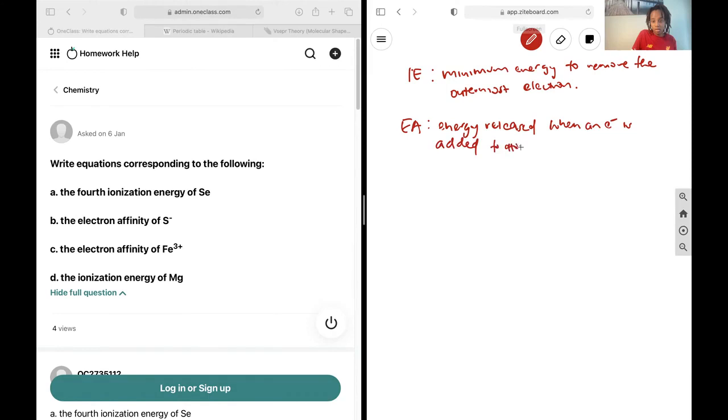Okay, so for our first question, you're asked for the fourth ionization energy of Se. So you'll want to get Se⁴⁺ since it's the fourth, plus an electron. And then we just balance out the charges on both sides. Here we have a total charge of 3+, you expect a total charge of 3+ on the other side too.